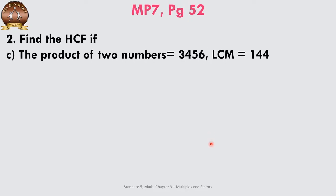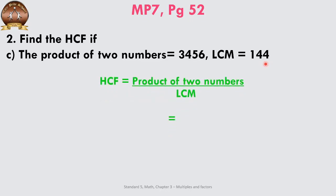Find the HCF if the product of two numbers is 3456 and the LCM given is 144. The formula we use here is: HCF is equal to the product of two numbers divided by the LCM. The product is 3456 and the LCM is 144. When we divide these two numbers, we get 24, which is the HCF of these two numbers.